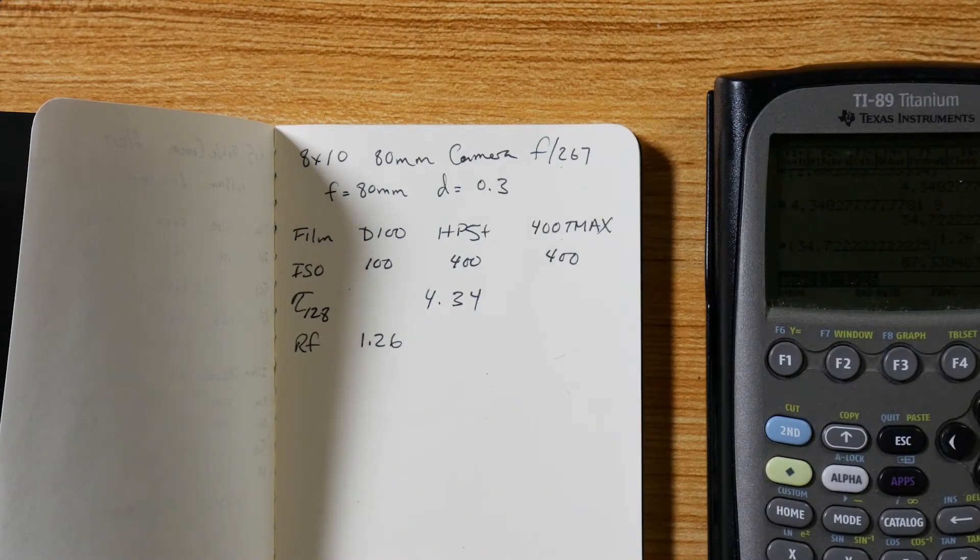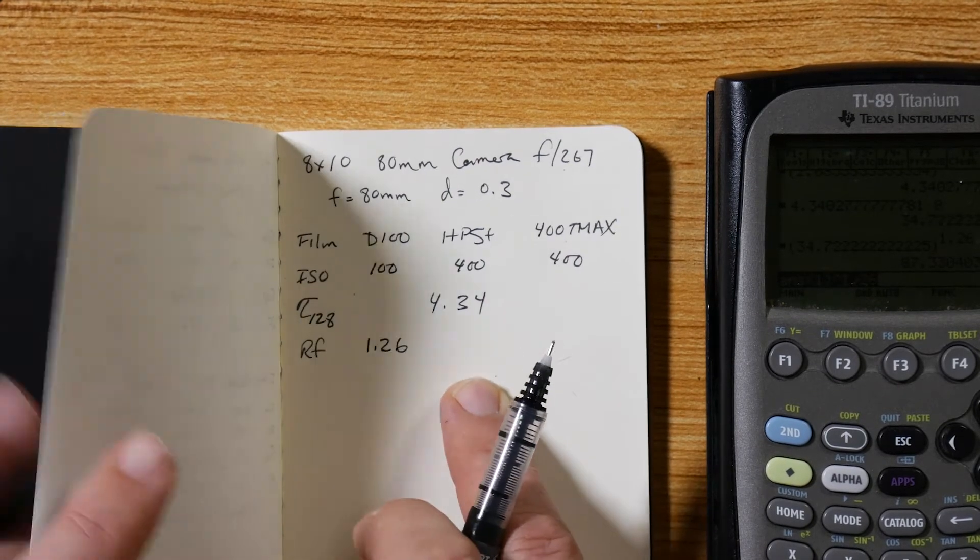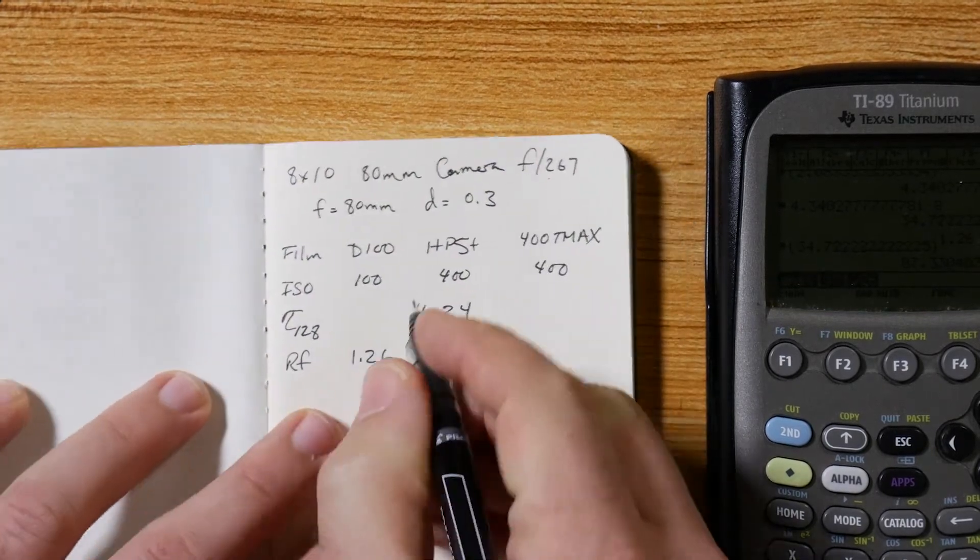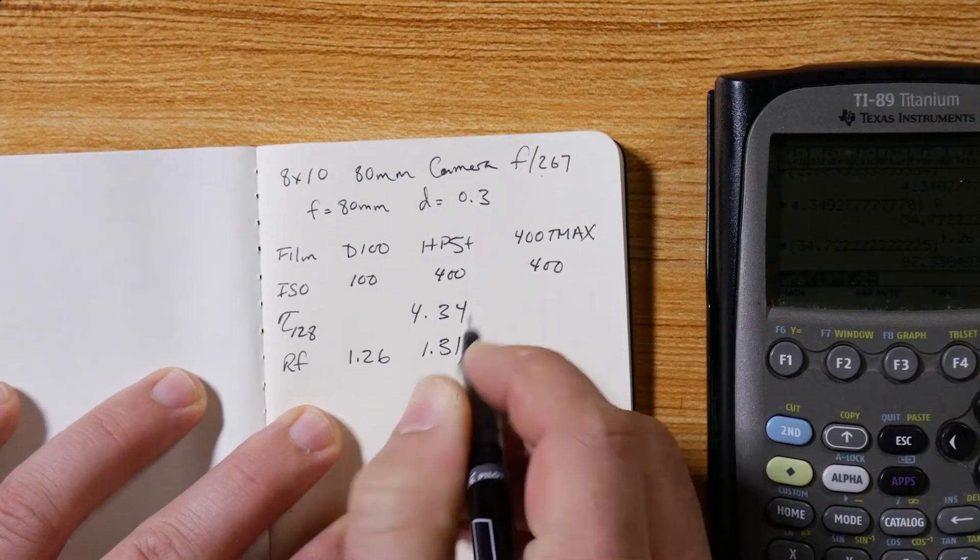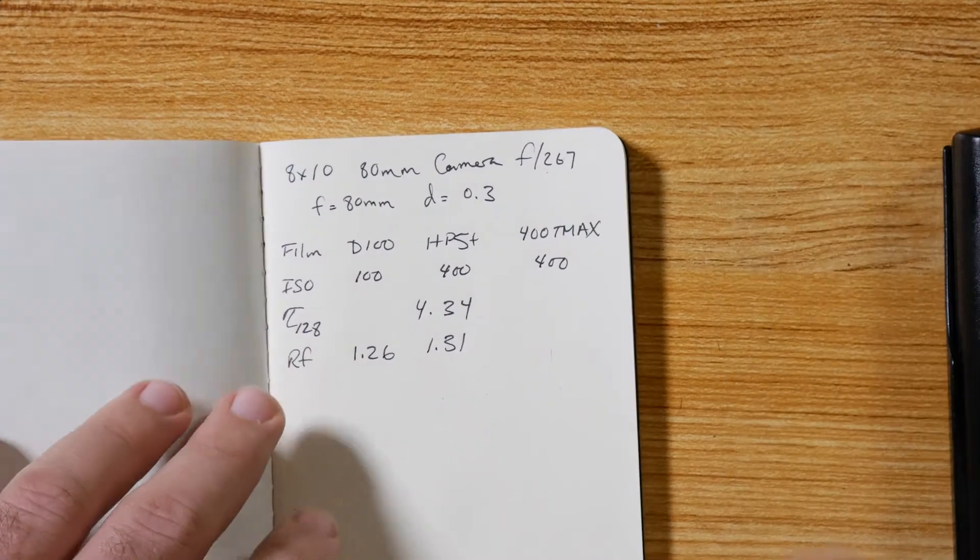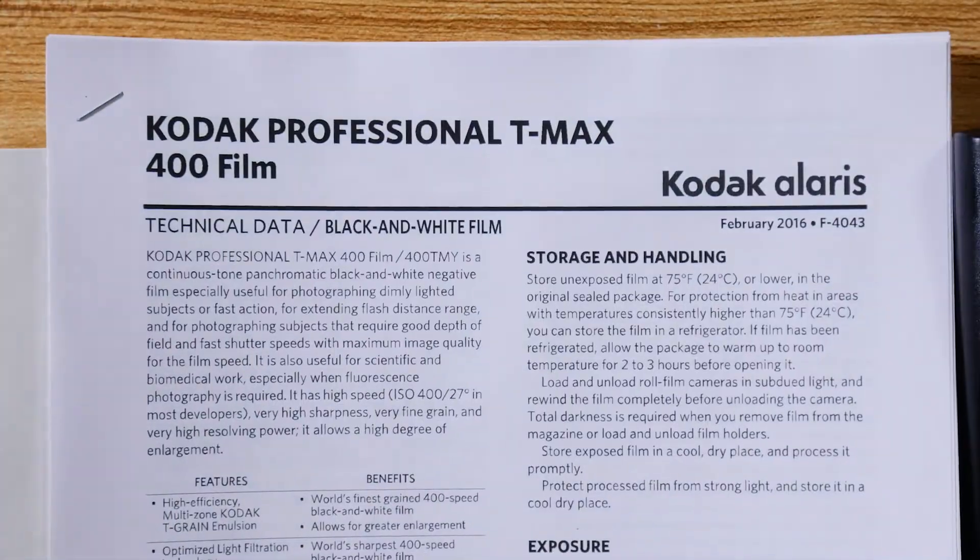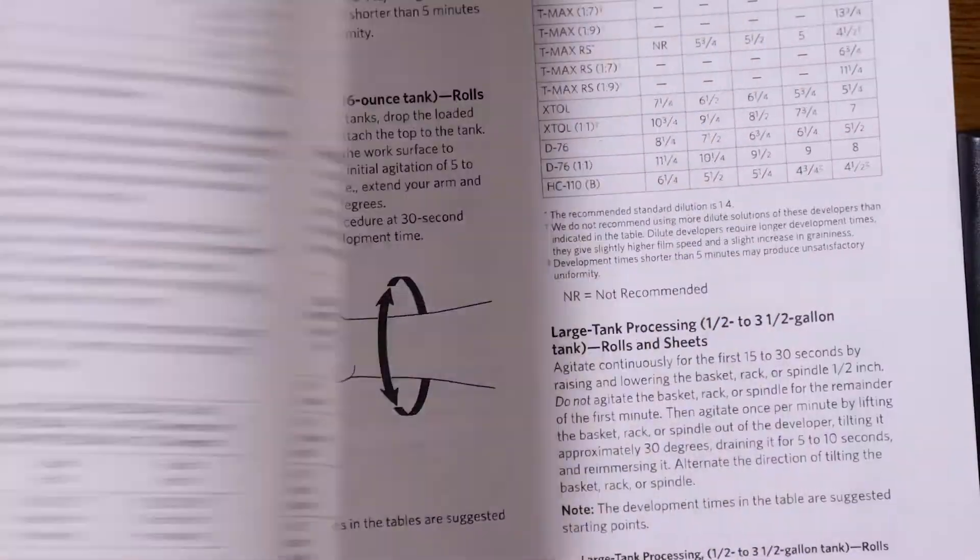So back to here, finishing our table. HP5, copy it over from the previous value: 1.35 that goes here, sorry 1.31. T-max is a little different. Here's the data sheet from Kodak for T-max, it's like seven or eight pages long.